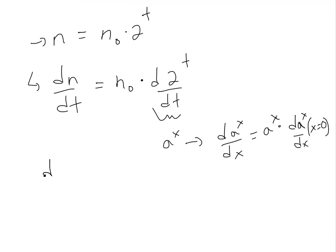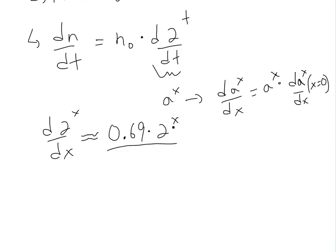For d(2^x), this derivative just equals approximately 0.69 times 2^x. Make sure you watch the video on the derivative of an exponential function in the video links below to get this. We're just going to use this approximation for this number.